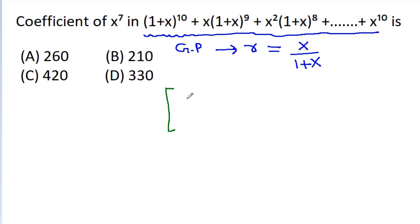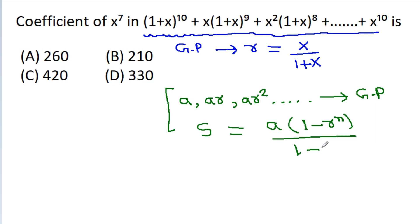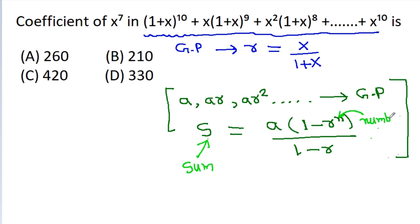Any sequence like a, ar, ar^2, and so on is called a GP. The sum of this sequence S is equal to a times (1 minus r^n) divided by (1 minus r), where S is the sum and n is the number of terms.